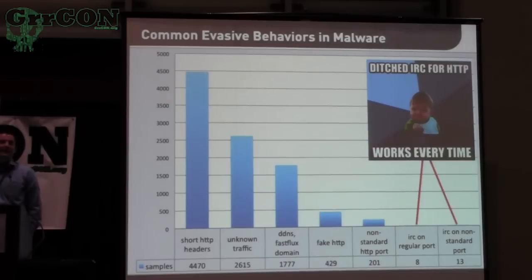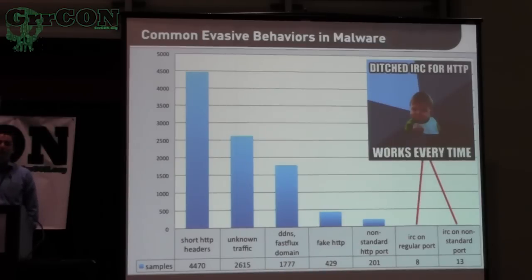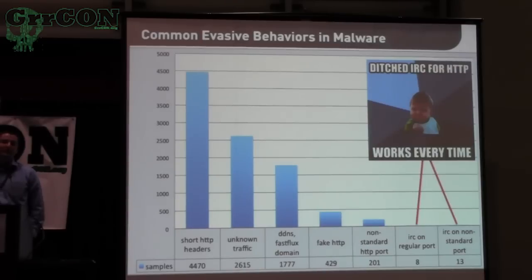When we go into customer sites and we see unknown traffic on the network — which we nearly always do — it's always one of two things. It's either custom in-house or proprietary software for which we have no knowledge, so they'll have to write signatures specifically to identify their software. Or, more commonly, it's malware running on the network using proprietary protocols, proprietary encryption, simply doing a byte of XOR-ing across the traffic — anything to evade any kind of smart scanning on that web traffic.